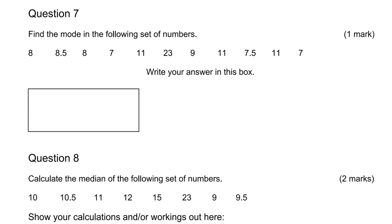Find the mode in the following set of numbers: 8, 8.5, 8, 7, 11, 23, 9, 11, 7.5, 11, 7. The mode is the most common number — the one that recurs most. Are there any numbers that repeat? We've got 8 twice, 11 three times, and 7 twice. So 11 appears 3 times — that's the most — so we're going to write 11 as the answer.